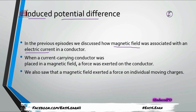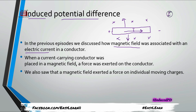When a current-carrying conductor is placed in a magnetic field, a force is exerted on the conductor. Suppose a conductor carries positive and negative current and is placed in a magnetic field — it will experience a force either toward one side or the other. This force must be at a 90-degree angle to the magnetic field lines for maximum force. We can find the direction using the right-hand rule.